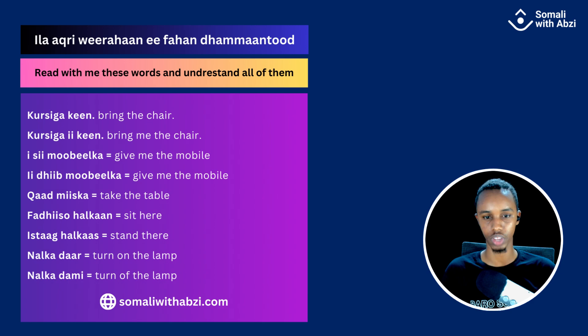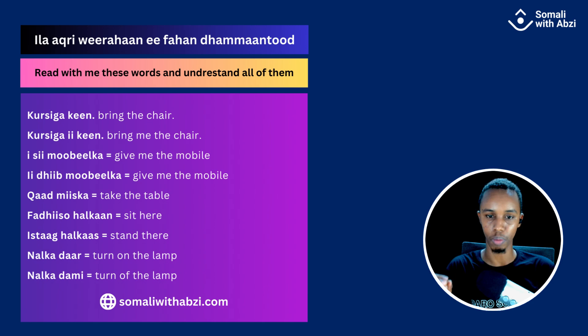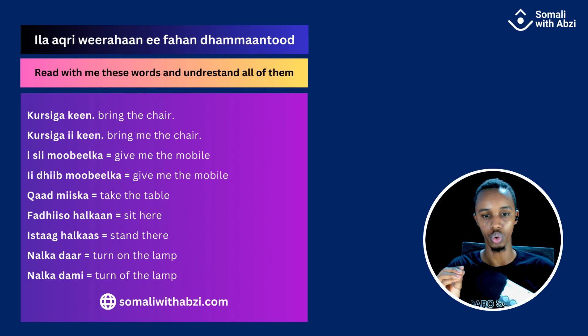The fourth one is 'e-deeb mobilka'. 'Dib' is to give and 'isi' is to give also, but the difference is: if I say 'isi mobilka', that means maybe it's my phone — give me the phone, I'm not going to return it to you. But 'e-deeb' is — give me, but it's not mine, I'm going to give it back. So 'isi' and 'e-deeb': give me something you own versus give me something you'll return.